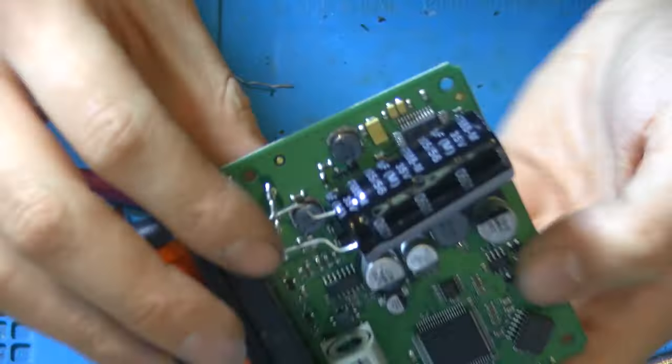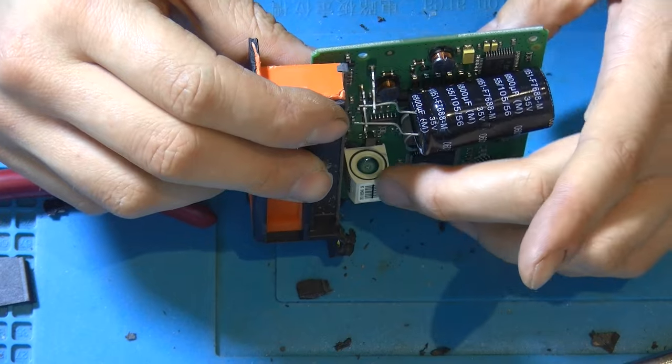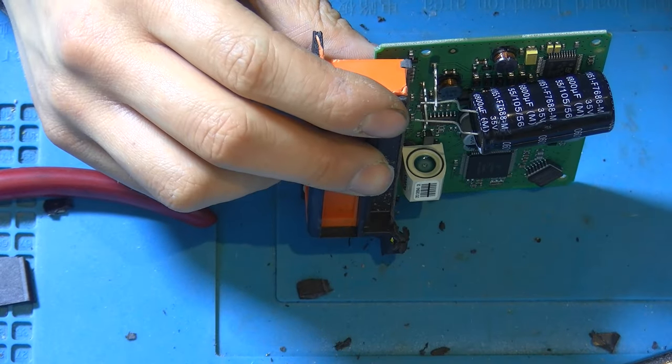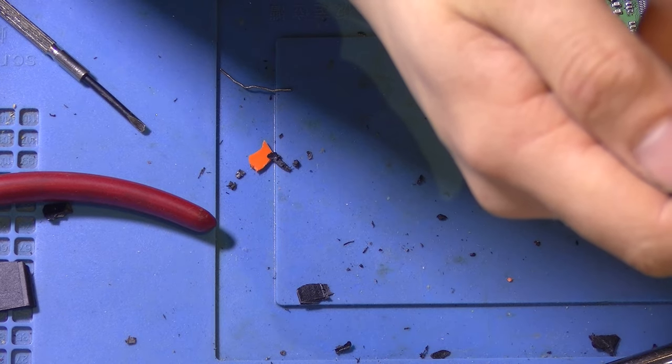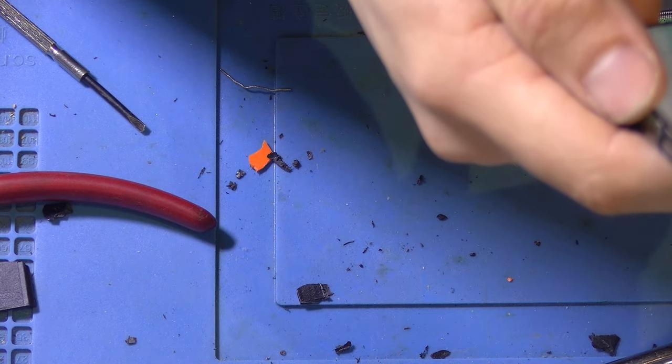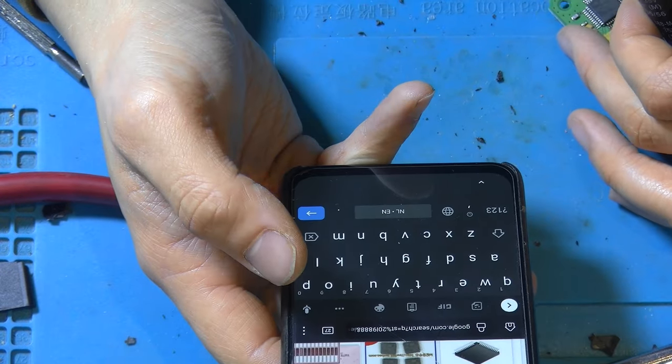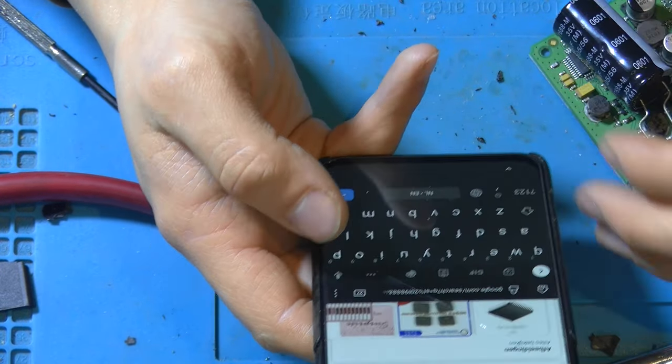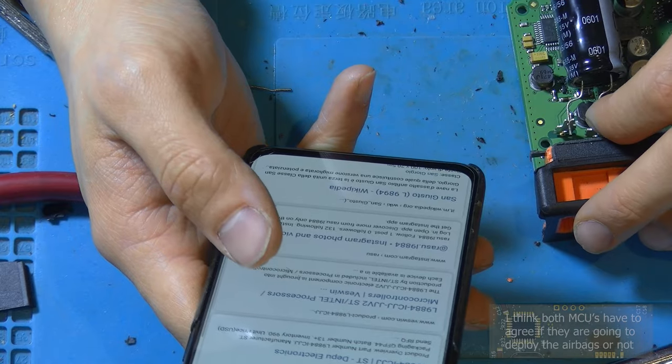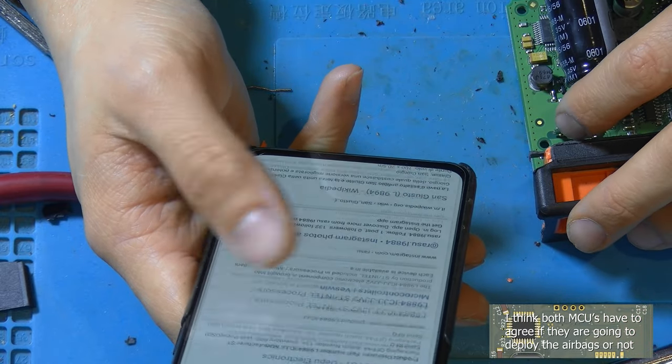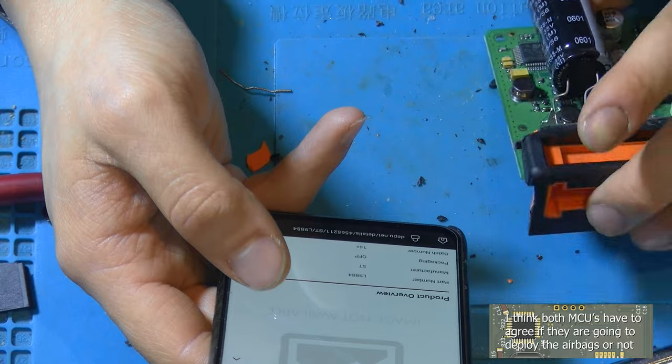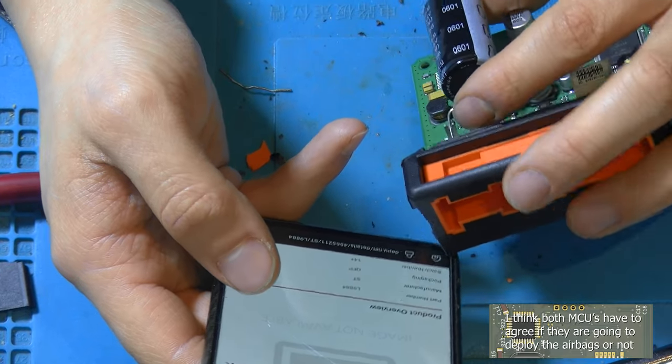So this white thingy, I think it's a visual fuse. It's produced by Schmidt. That looks to be a processor. And the other one is an L98848, and that also looks to be a processor. So I'm sure that at least one of these should be an accelerometer.